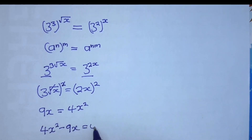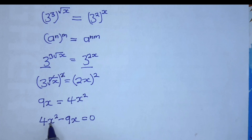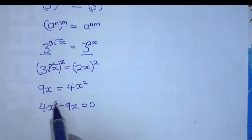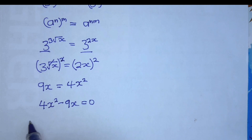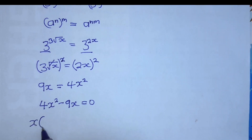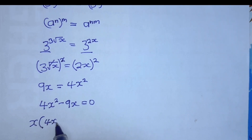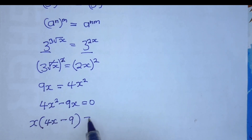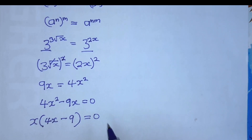Therefore 4x squared minus 9x equals 0. We have x in common, so we can factor x outside: x times open bracket 4x minus 9, which is equal to 0.